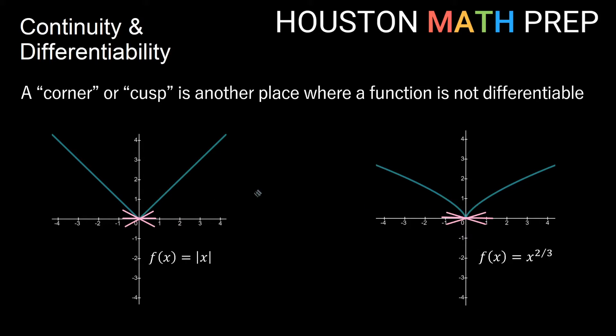They are continuous everywhere, right? Just because there's a corner doesn't mean we have a break in the graph. But when we have a sharp point like a corner or cusp, then that tells us that we are not differentiable at x equals zero for both of these.